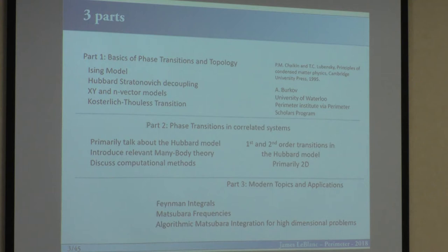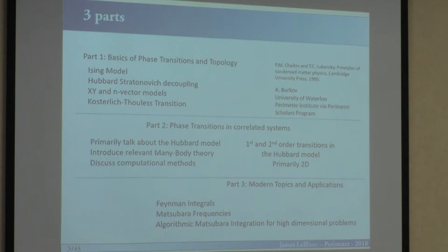I'm going to introduce and discuss in real detail the Hubbard-Stratonovic decoupling because it's going to come up later. My goal is to touch again on these subjects later on. I'll introduce the XY and N-vector models and talk about the KT transitions. A lot of what I'll be presenting is in the textbook by Chaikin and Lubensky, and also largely based on courses I took as a graduate student at the University of Waterloo by Anton Berkov, later somewhat revised by myself.